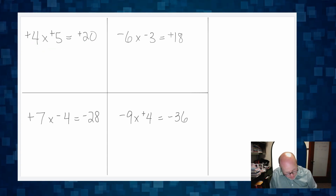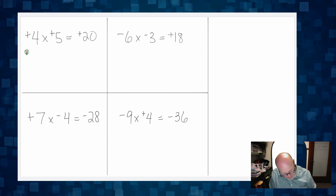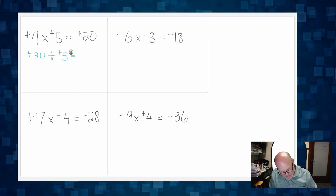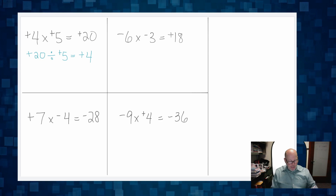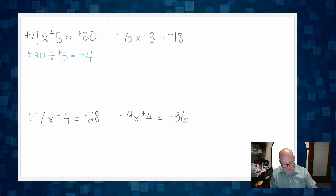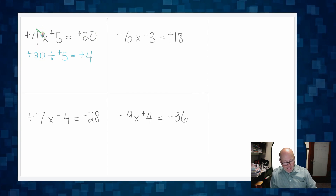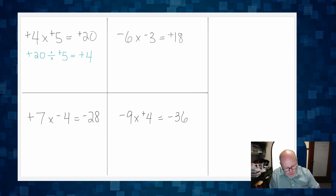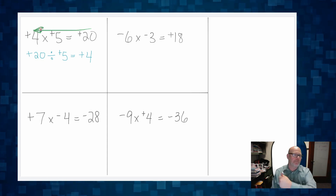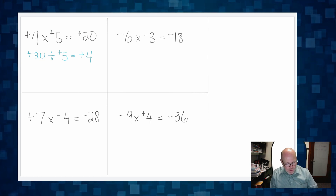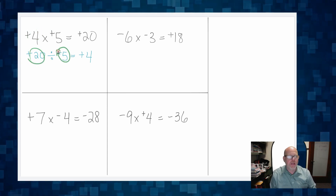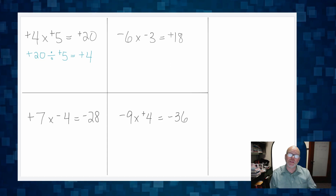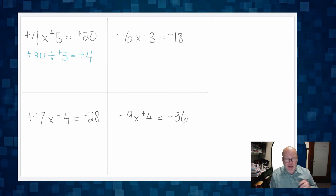So let's write that down: positive 20 divided by positive five is equal to positive four. Of course, they could also do positive 20 divided by positive four equals positive five — but for now, let's only focus on 20 divided by five equals four, keeping it straight going backwards.